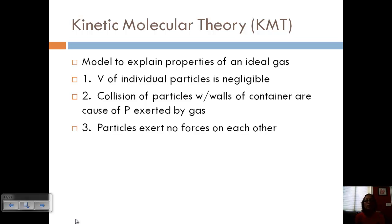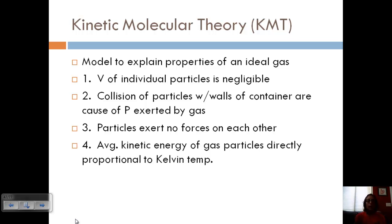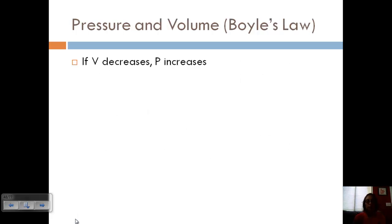The third postulate is that particles exert no forces on each other — remember, we're talking about an ideal gas. They may exert forces on the container, but not on each other. The fourth part of the theory is that the average kinetic energy of gas particles is directly proportional to the Kelvin temperature. Directly proportional means a positive relationship: as we increase temperature, we increase the average kinetic energy. Now let's look at some of the variables in the ideal gas law and explain why they occur using kinetic molecular theory.